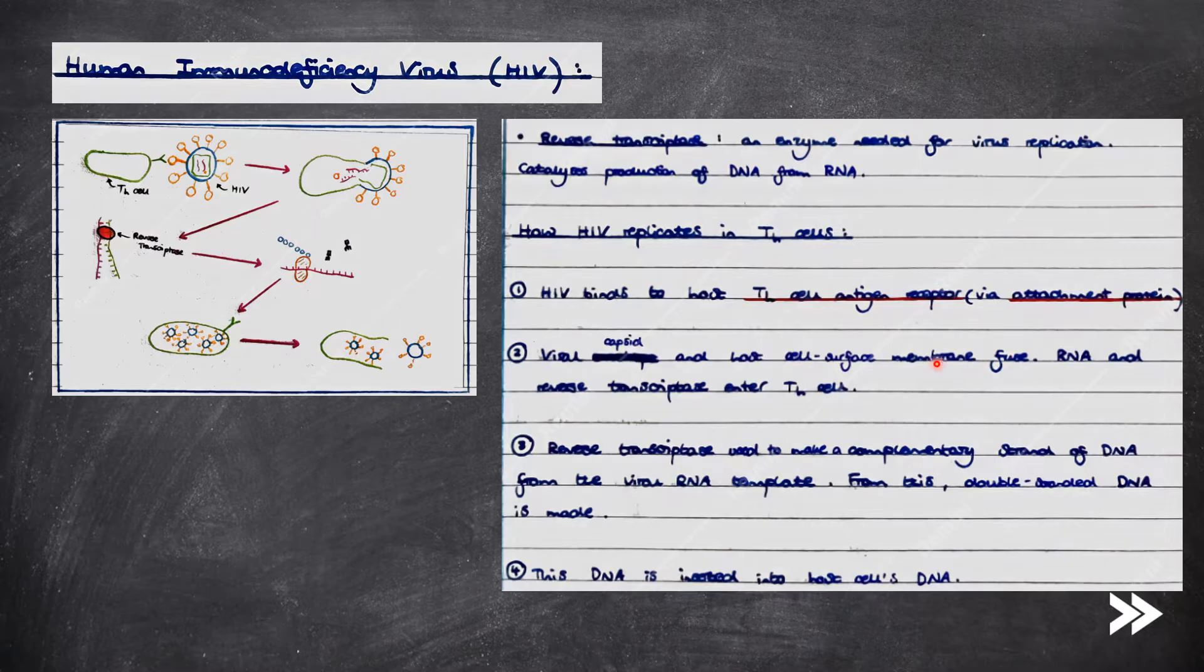So we've already had a look at how viruses replicate inside host cells previously in the specification. But now we need to consider how HIV specifically replicates inside a T helper cell. Just a quick note that a reverse transcriptase enzyme is an enzyme which catalyzes the production of DNA from RNA, and it's an enzyme which is required for viral replication.